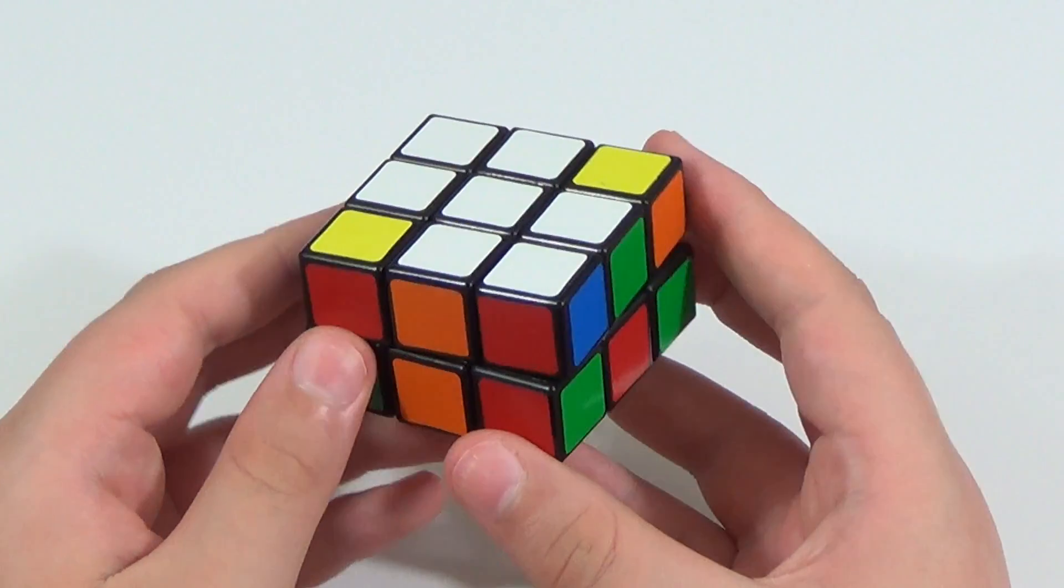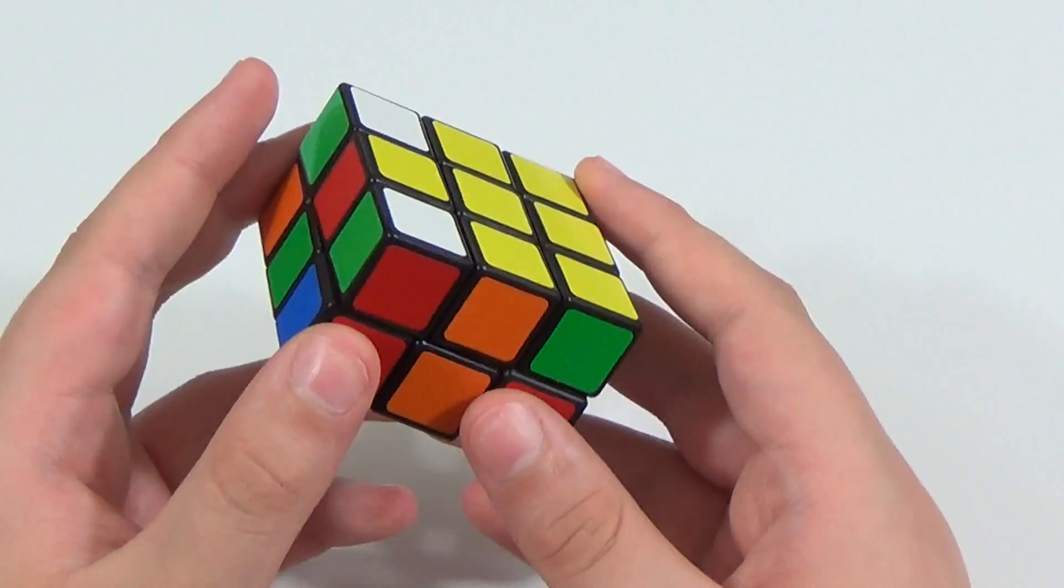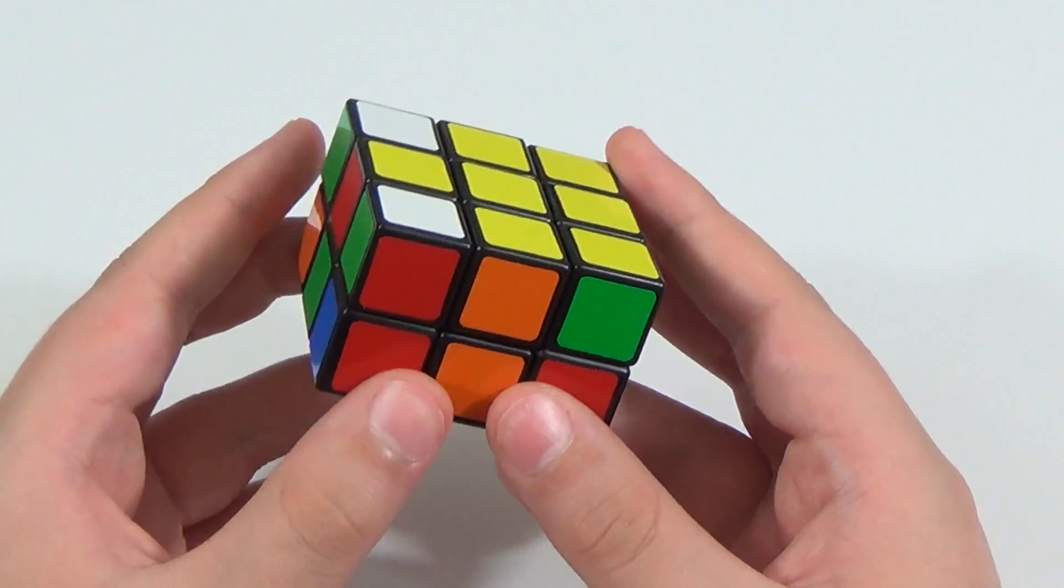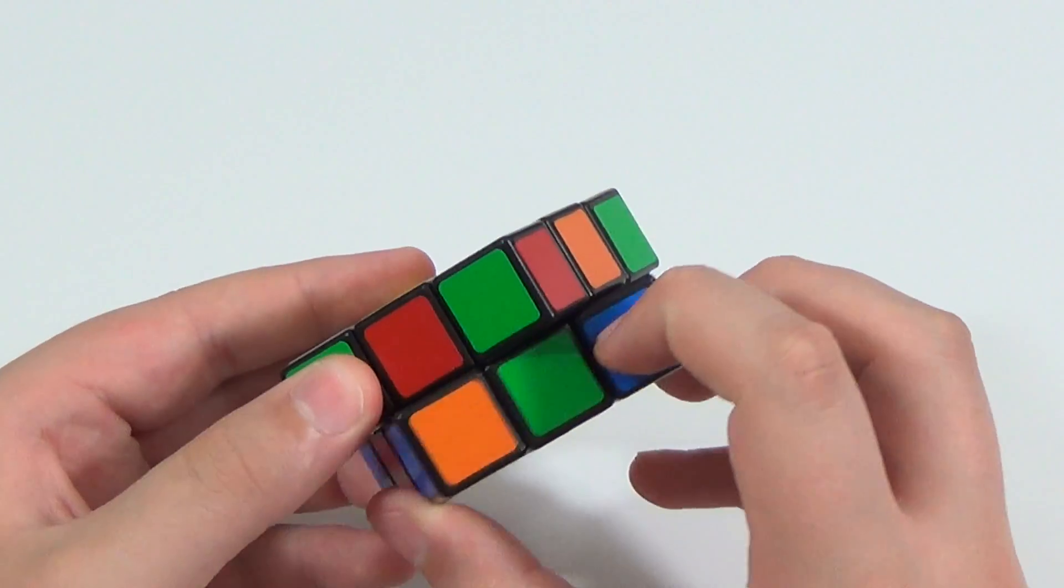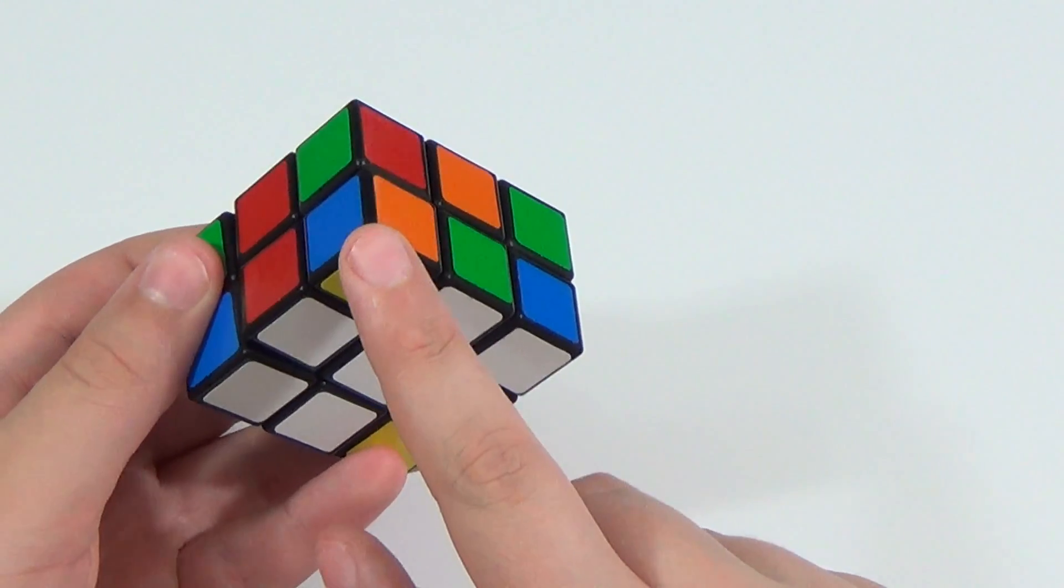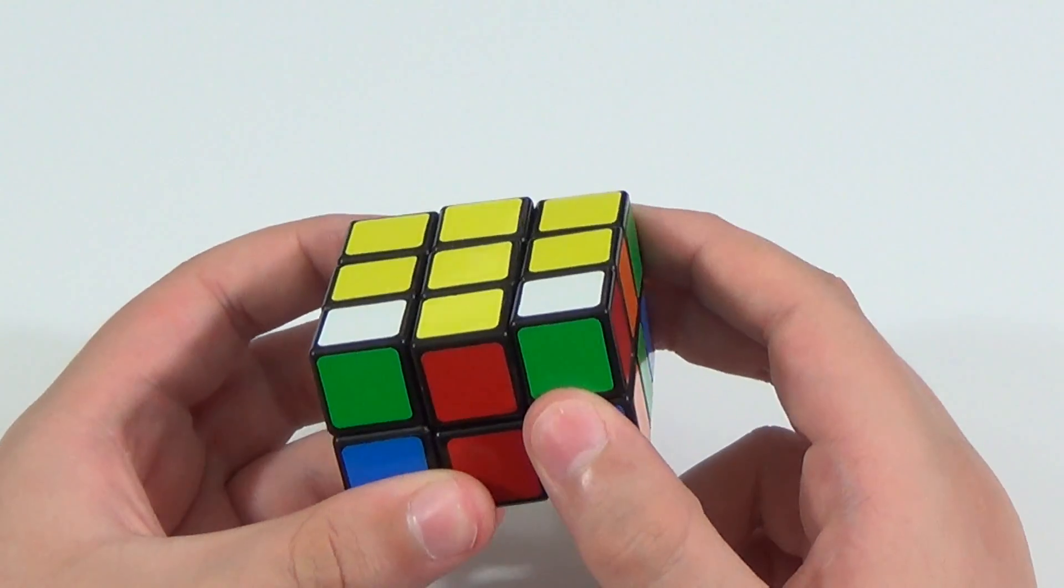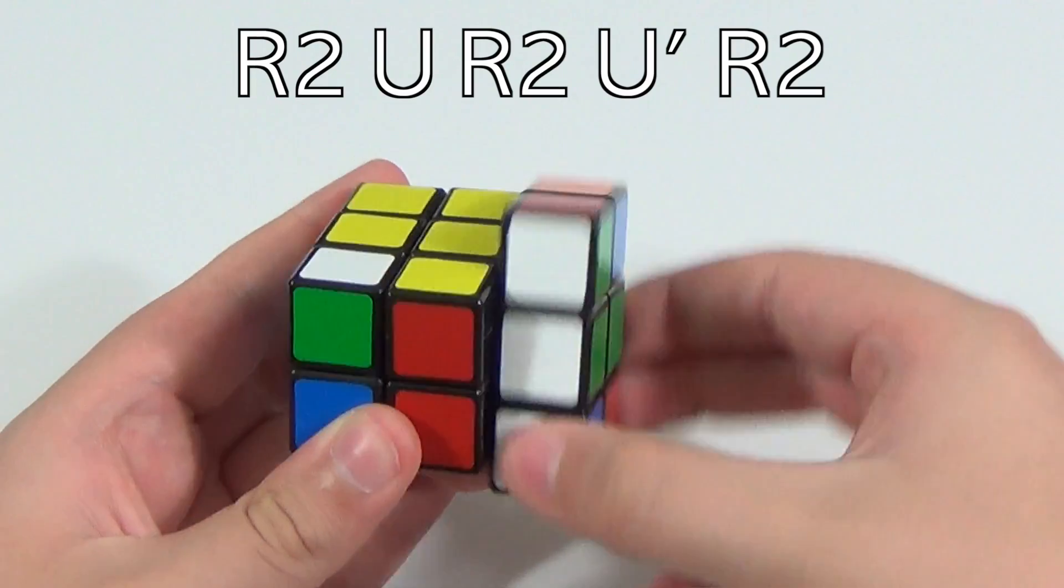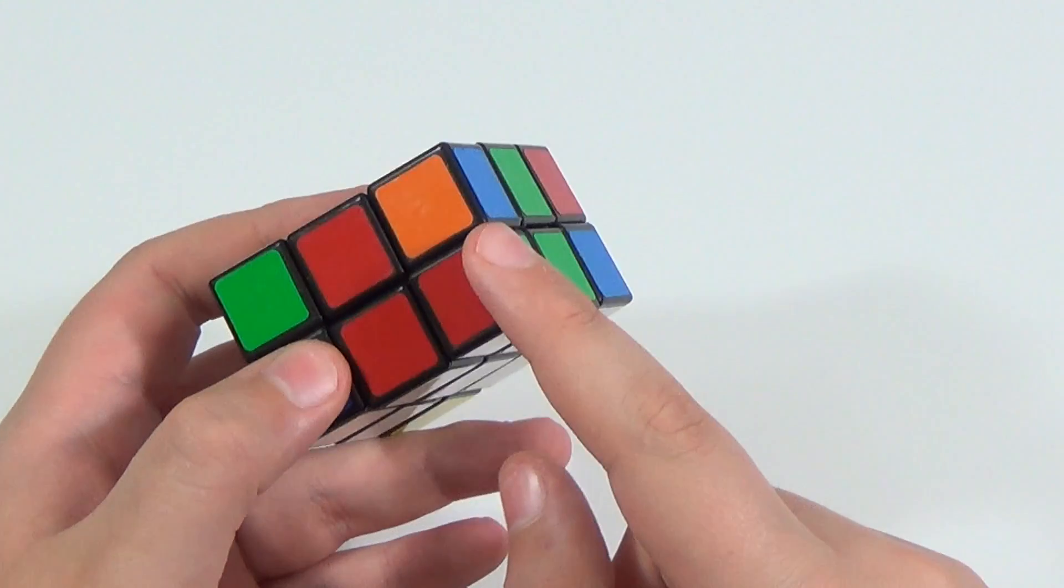Okay, so moving on to step two, which is first layer corners. So let's move the cross now to the bottom, and we can look in the top layer for white corners, and we'll just go ahead and use this one here. So in a similar way to the way we did the cross edges, we'll just turn the bottom layer until the corner piece matches up right underneath where it needs to go, which is here. And then we can perform this algorithm: r2, u, r2, u prime, r2. Very simple and easy to execute algorithm that's really easy to memorize as well.